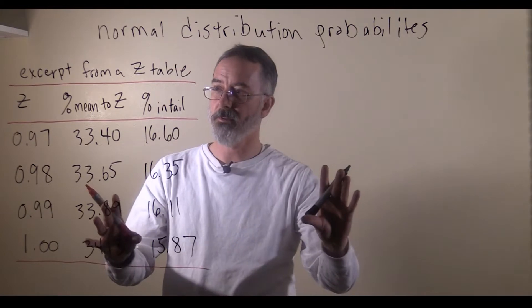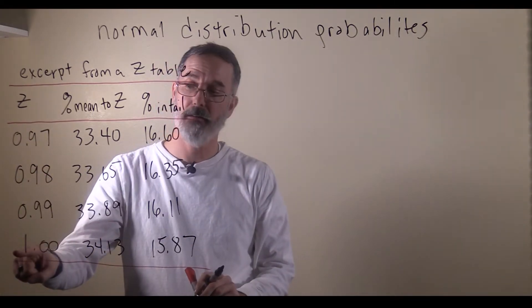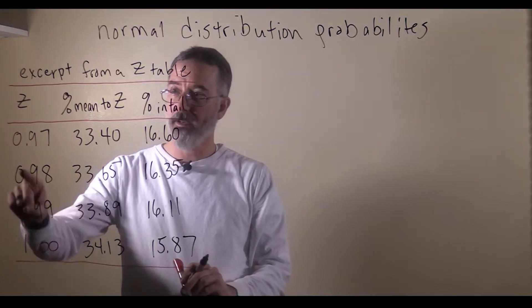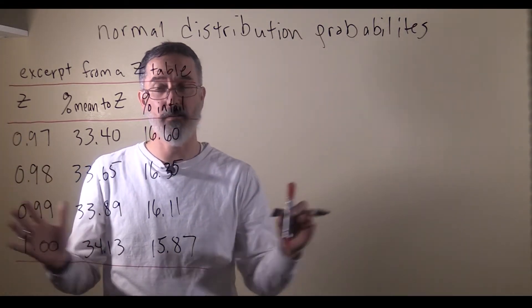With that distribution I drew before, it had a z-score of 1 on there, and it went down to a z-score of 2, but now the z-scores are broken down to the hundredths place, so it is a much finer granularity.